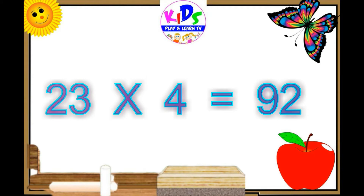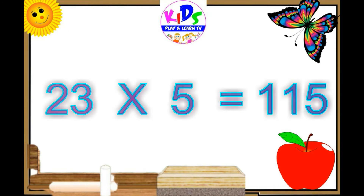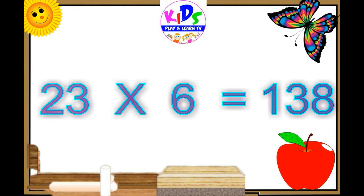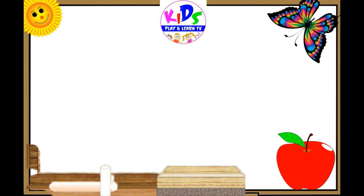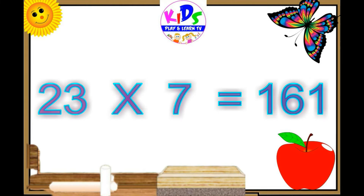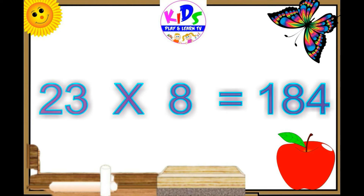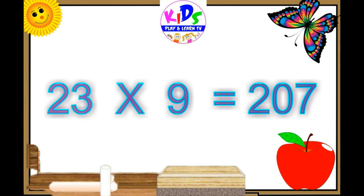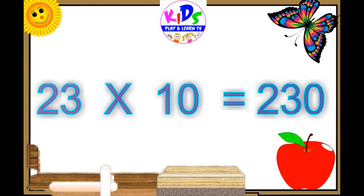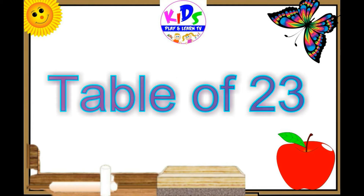23 4s are 92, 23 5s are 115, 23 6s are 138, 23 7s are 161, 23 8s are 184, 23 9s are 207, 23 10s are 230. Let's repeat.